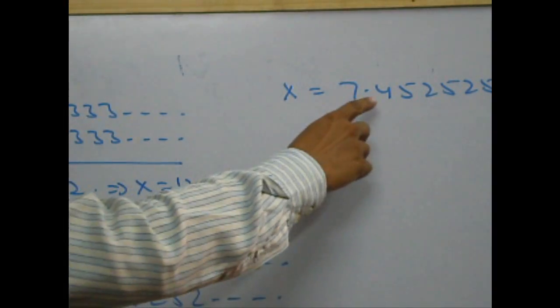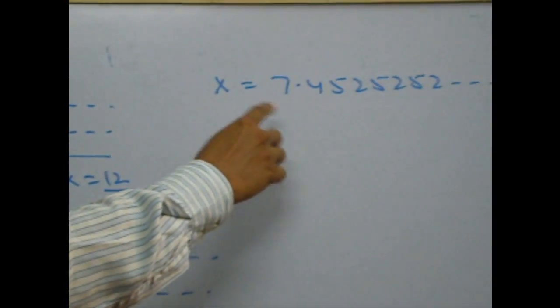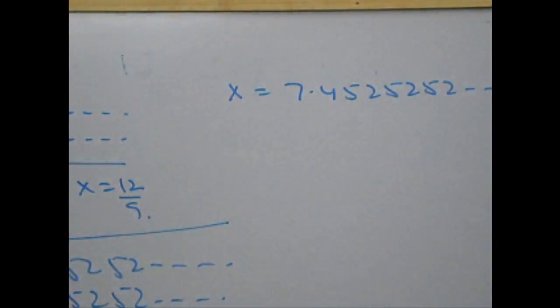Mind you guys, here 4, that is the first digit after decimal, is not recurring. It is just the 52 part of it which is recurring.